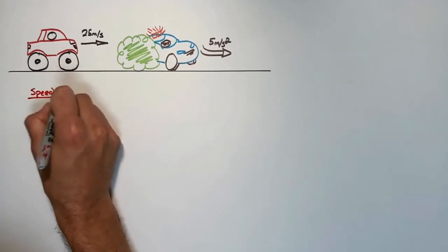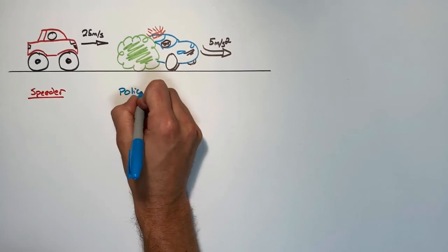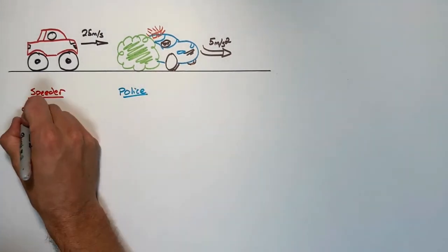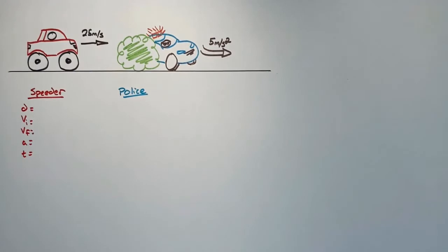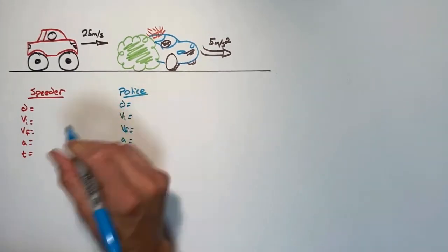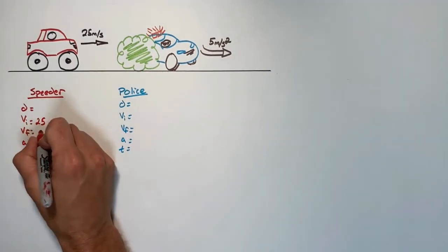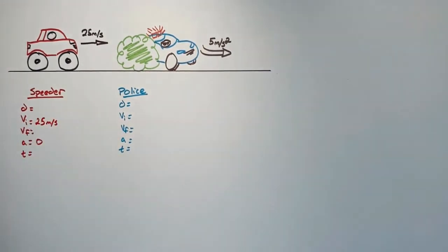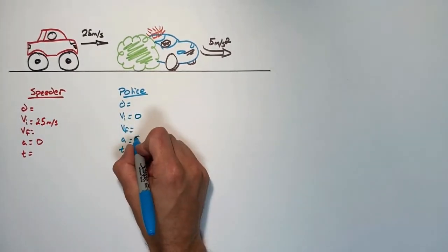To do this, we're going to look at the motion of the speeding truck and the motion of the police car. We'll look at our five kinematic variables for both. The truck is always traveling at 25 meters per second, which means it has an acceleration of zero. The police car, on the other hand, is starting at rest and is going to accelerate at 5 meters per second squared.